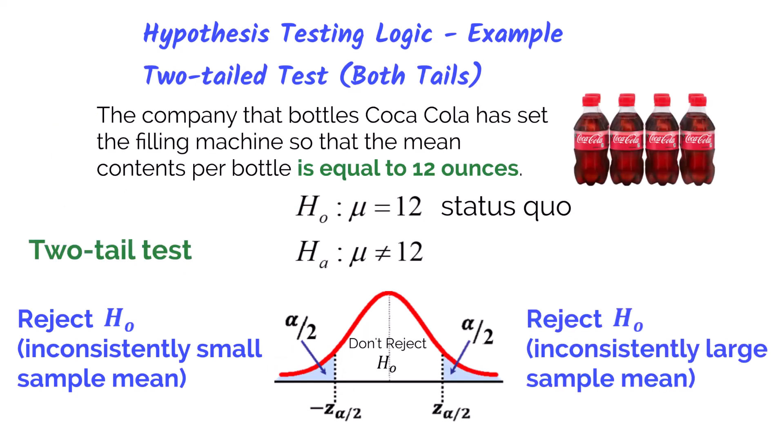For a two-tailed test: the bottling company for Coca-Cola has its filling machine set to 12 ounces per bottle. Since 'equals 12 ounces' is in the story, we know this will be the null hypothesis. Coca-Cola would be concerned if it's either under-filling or over-filling its bottles. If the sample mean is found to be much larger — falling in the right tail — or much smaller — falling in the left tail — we would reject the null and need to fix the machine. If the sample mean falls within the middle area, we do not reject the null and know the machine is working fine. These distribution curves are a helpful way to visualize the sample mean against the hypothesized population mean.